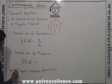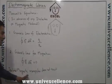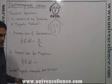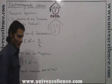Since isolated magnetic monopoles do not exist, a magnet is a dipole having two poles — a north pole and a south pole.